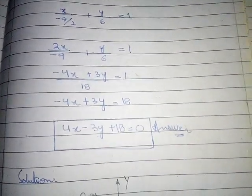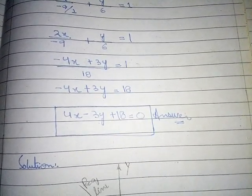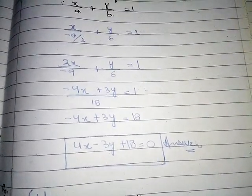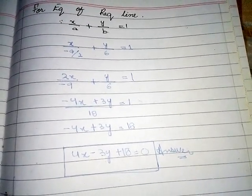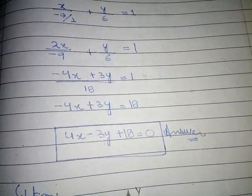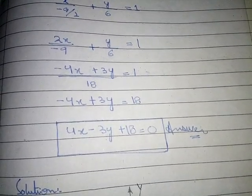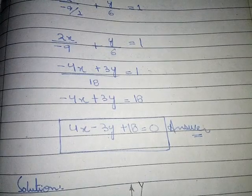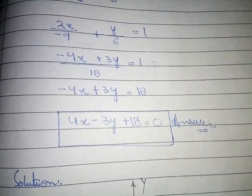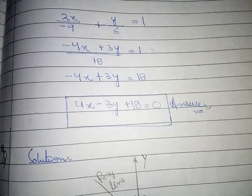Taking LCM = 18: -4x + 3y = 18. Rearranging: 4x - 3y + 18 = 0. This is our required equation of the straight line which passes through the given point.